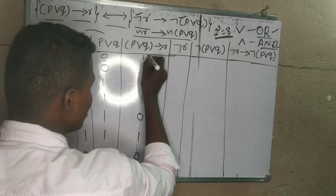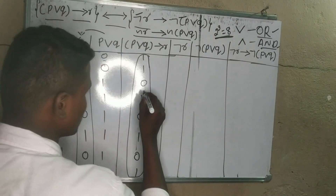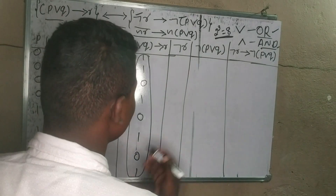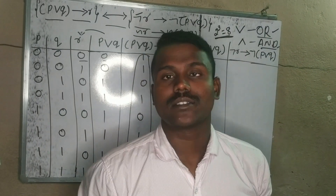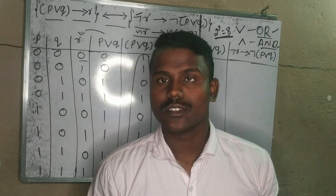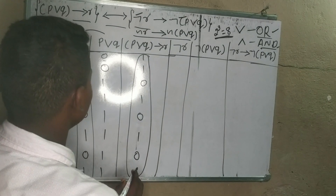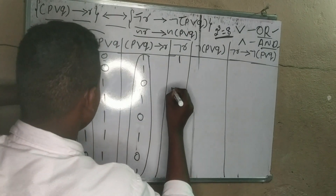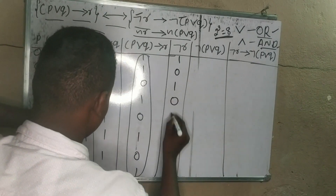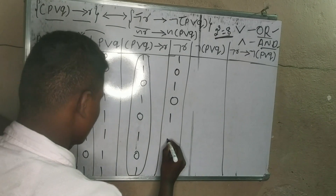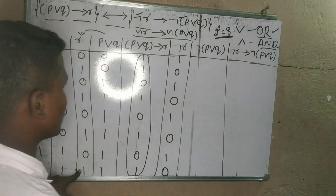This is the last column. This is the negation of R. Negation of R means not R. Not R means R is reversed — 0 becomes 1 and 1 becomes 0. This is the negation of R.